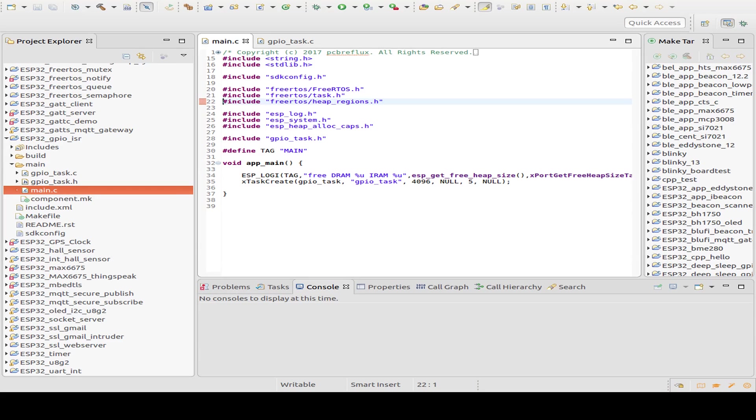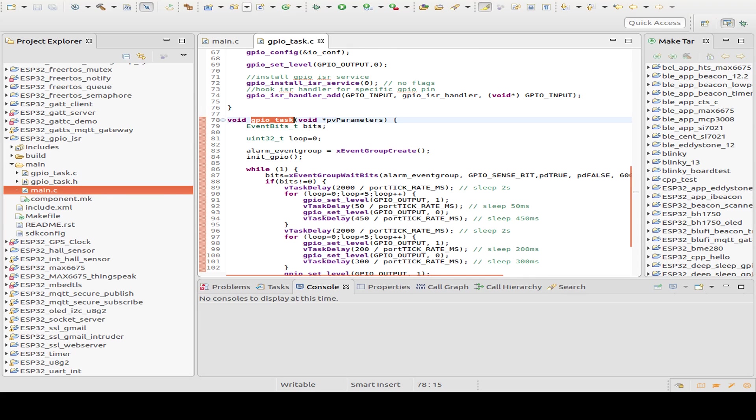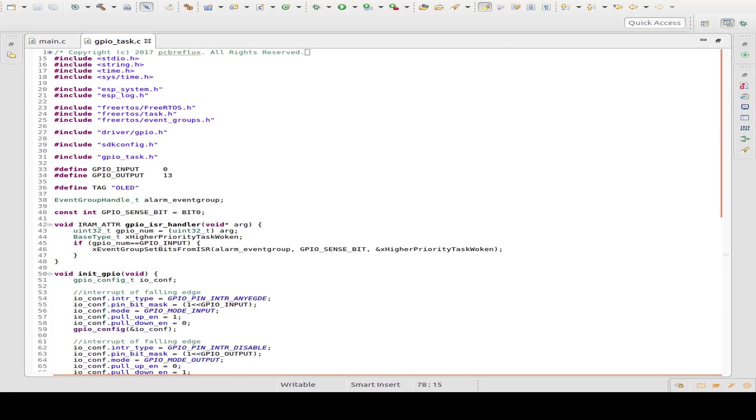And now a brief look to the source code. This is the main routine. We create a task and everything happens in the GPIO task. So let's switch to the GPIO task. We can have a bigger window. Just some header files that we included.